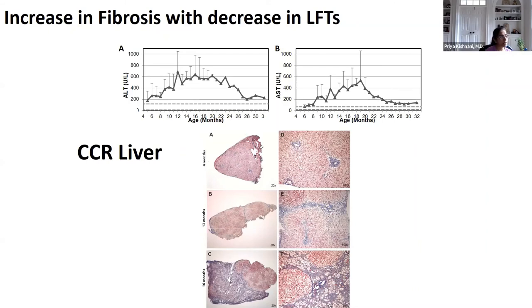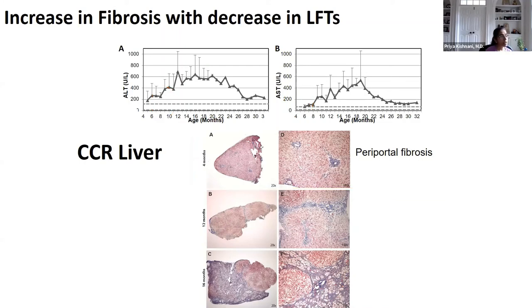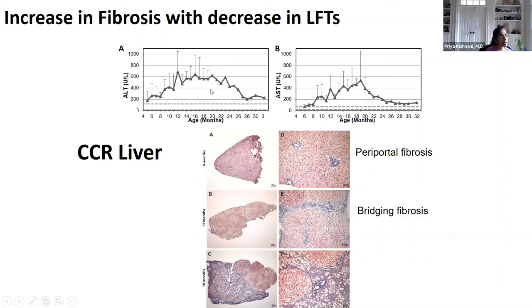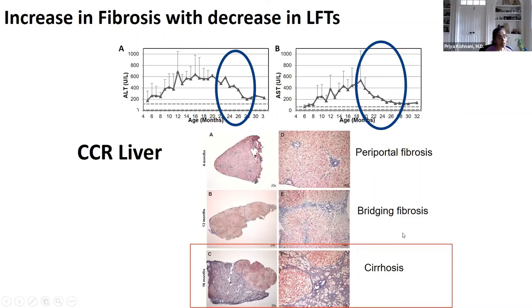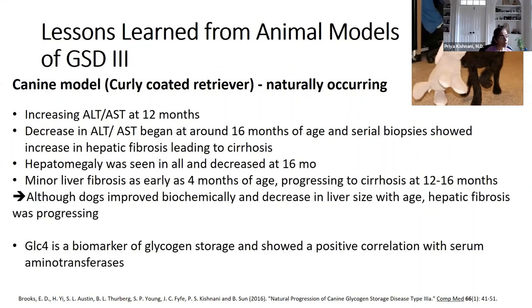The mouse model has also been informative. A biomarker called Glc4 — a limit dextrin breakdown product of glycogen — was developed at Duke. It is elevated in GSD type 3, and its levels increase then decrease over time, paralleling the liver and muscle enzyme pattern. Importantly, a decreasing Glc4 may not always indicate improvement — it could reflect increasing scar tissue rather than glycogen clearance. Glc4 has been used as a biomarker in Pompe disease and is now being applied to GSD type 3.